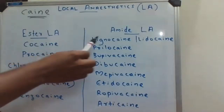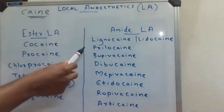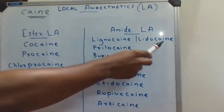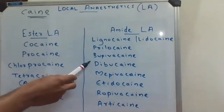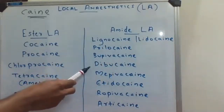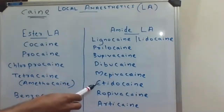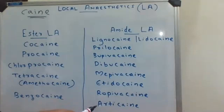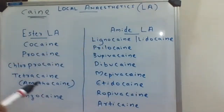Now coming to the amide local anesthetic drugs. Examples are lignocaine (also called lidocaine), prilocaine, bupivacaine, dibucaine, mepivacaine, etidocaine, ropivacaine, and articaine. All these drugs belong to the amide local anesthetic category.